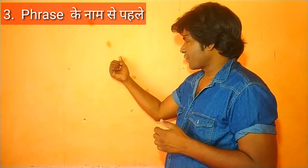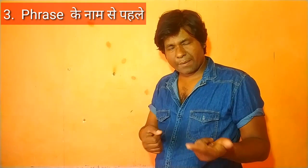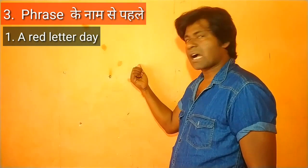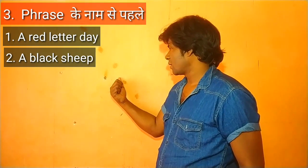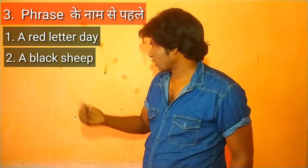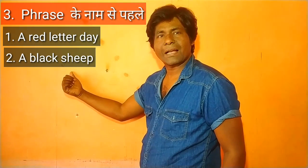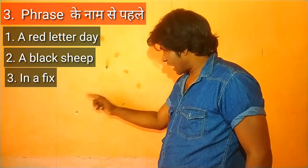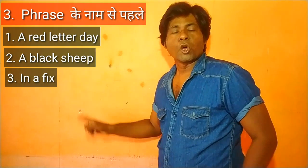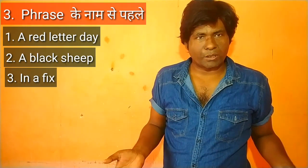Number 3 mein — phrase. Phrase ka example: 'A rainy day' ka matlab hota hai — yadgaar din. 'A black sheep' ka matlab hota hai — badnaam vyakti. 'In a fix' — jahan 'a' laga hua hai — ka matlab hota hai — udher-budher mein hona. Toh aise phrases ke pehle bhi 'a' ya 'an' ka prayog hota hai.